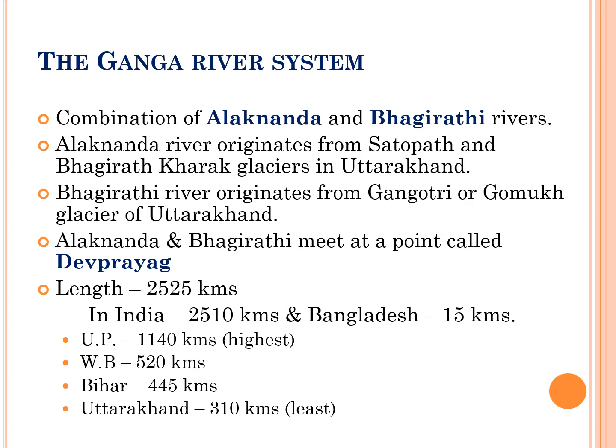Of these 2,525 kilometers, 2,510 kilometers flows in India and around 15 kilometers flows in Bangladesh. In India, of these 2,510 kilometers, Uttar Pradesh accounts for around 1,140 kilometers, which is the highest in India. West Bengal accounts for around 520 kilometers, Bihar 445 kilometers, and Uttarakhand 310 kilometers.